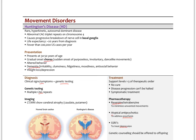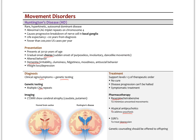This rounds out our discussion of movement disorders, providing a summary of Parkinson's, the Parkinson-like syndromes, a general approach to Parkinson's treatment, and Huntington's disease. Be familiar with the terminology discussed around movement disorders as well.